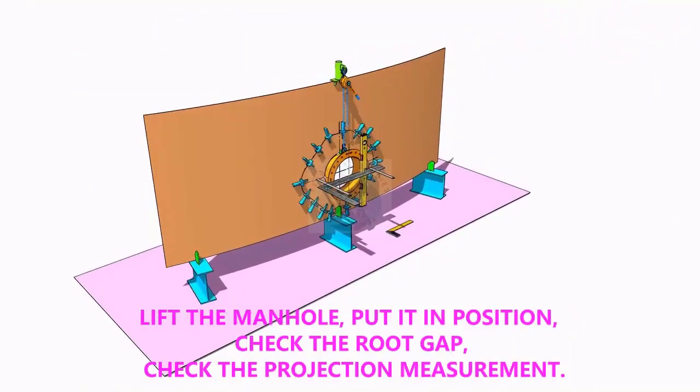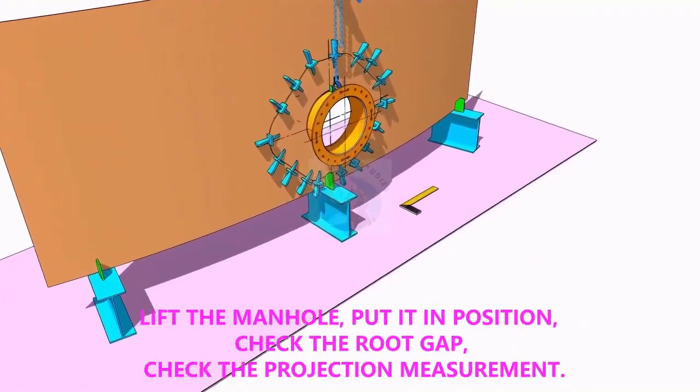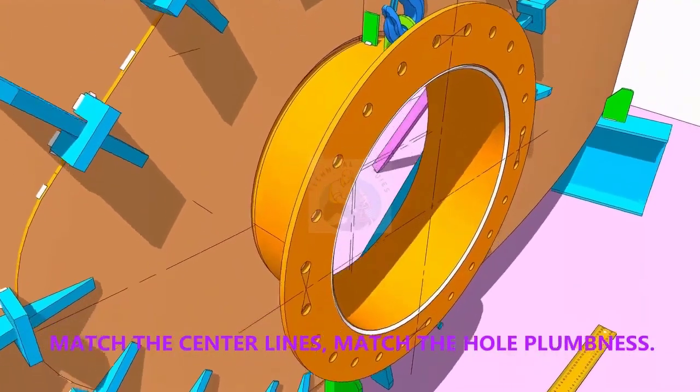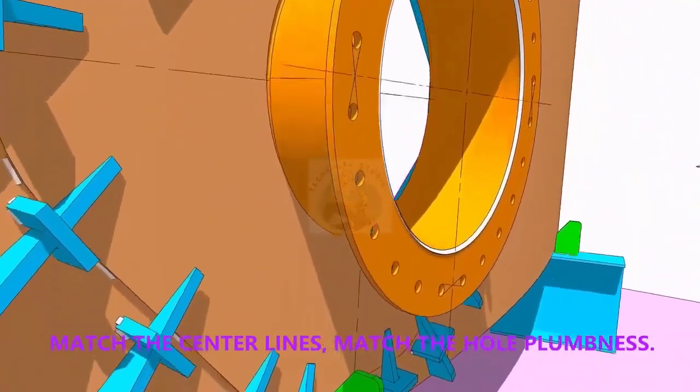Put the manhole in its position. Correct the plumbness. Correct the projection of the manhole. Correct the gap. Check again the plumbness.